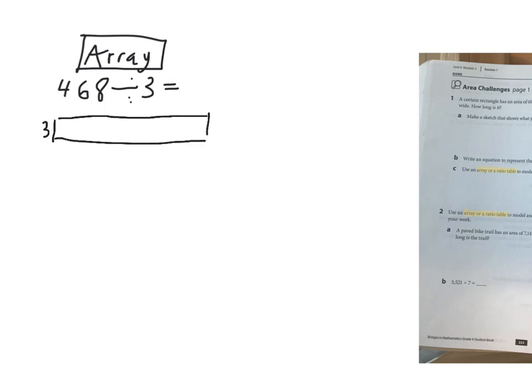So I'm going to do 3 times 100 first. That will give me 300. I can't do another 100, that's going to be too much, so why don't I do half of that, which would be 3 times 50.